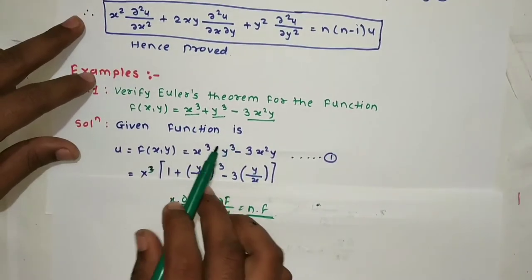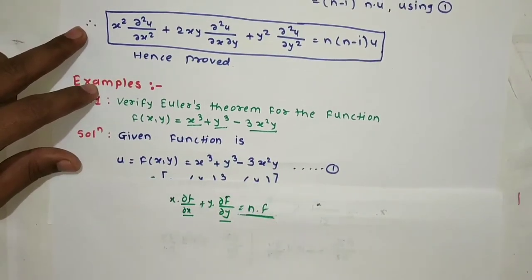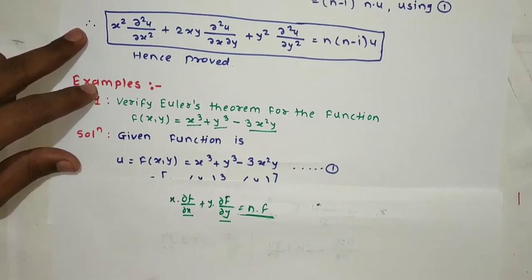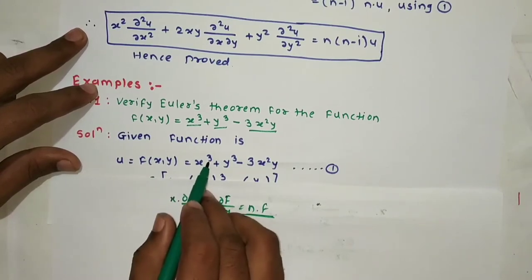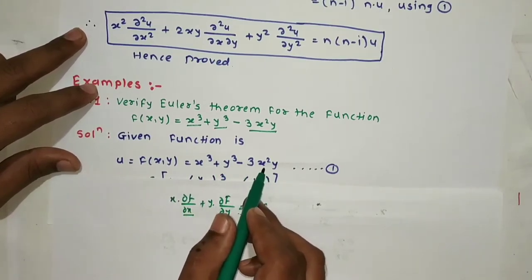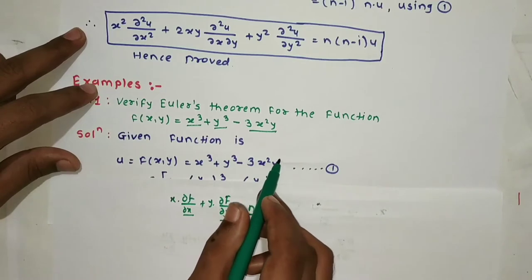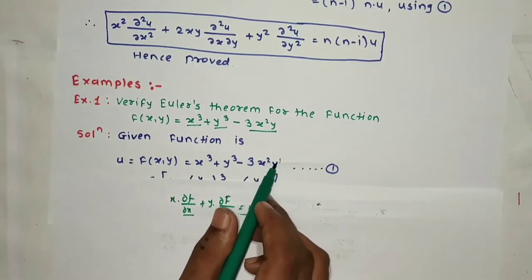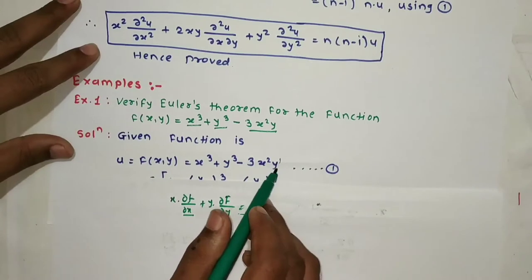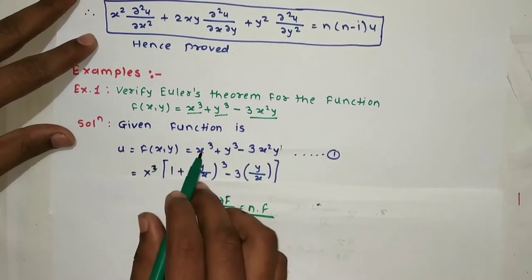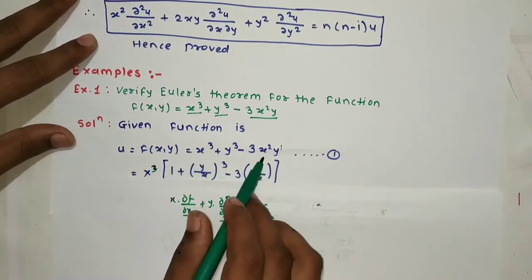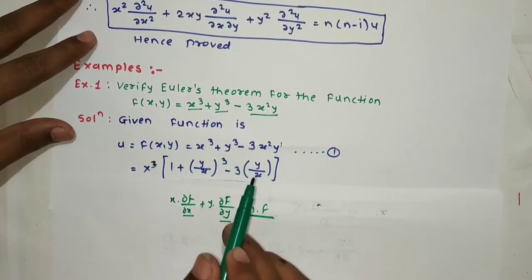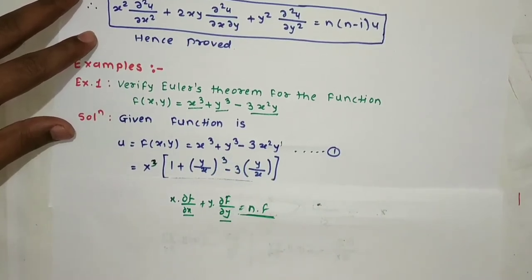First show that the given function is a homogeneous function. The problem shows it has degree 3. For each term, the sum of the indices is 2 + 1 = 3. The degree of each term is 3, so this is a homogeneous function of degree 3.